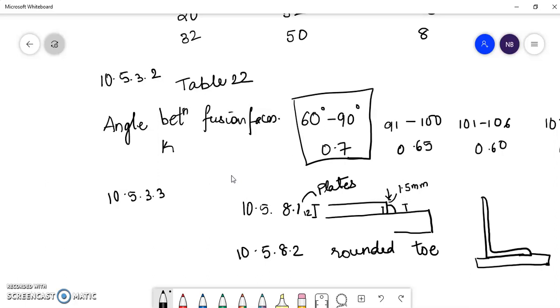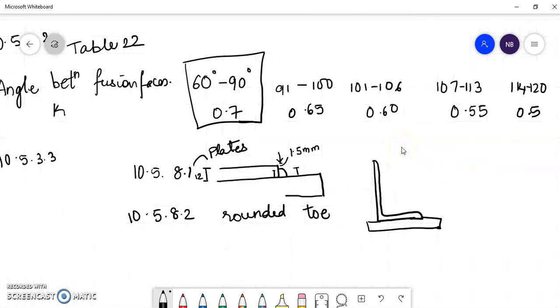So when I am applying a weld to such a section, here, I should leave a clearance of 1 fourth T, where T is the thickness of the toe.